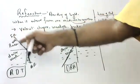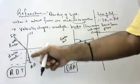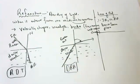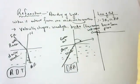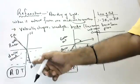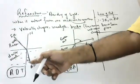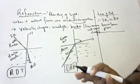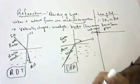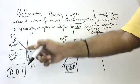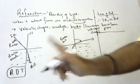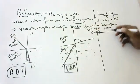Incident ray coming like this, entering the denser medium, will go like this — it will never go back like this. It will never happen. So all rays are on the same surface.